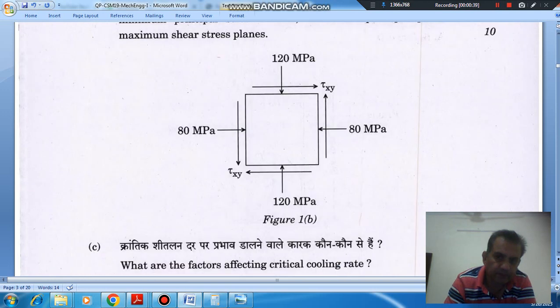So here, Sigma X is minus 80 MPa, Sigma Y is minus 120 MPa, and Tau XY is here.